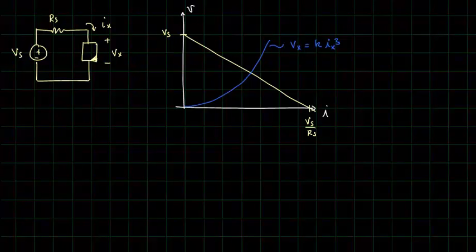In this video lecture, I'm going to show how to use an iterative manual, or by-hand, method to numerically solve for the DC operating point of a circuit that contains one nonlinear element.